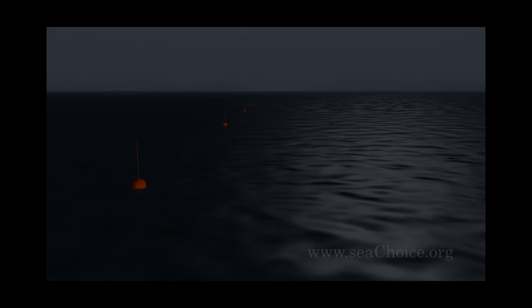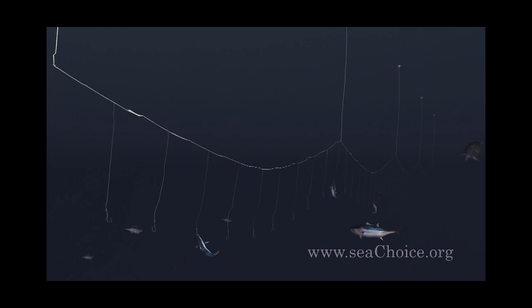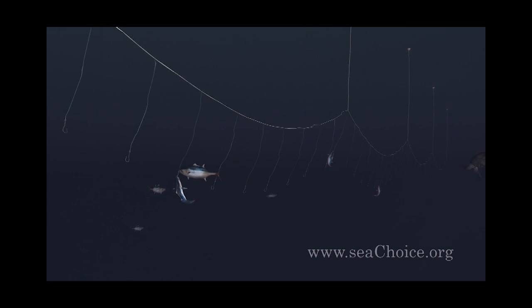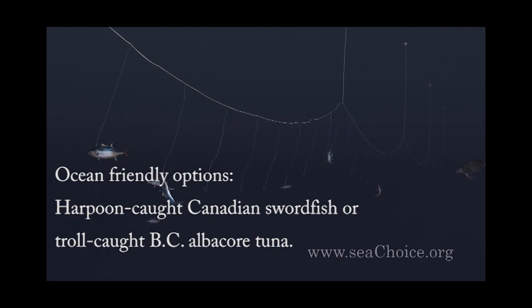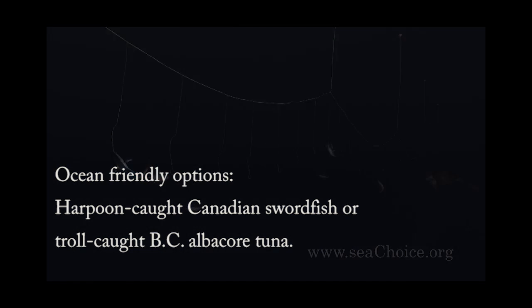In Canada, pelagic longlines are used in the Atlantic for tuna and swordfish. Although pelagic longlines have little to no impact on ocean habitat, they can have extremely high bycatch rates. Up to about half of their total catch may be non-target species.